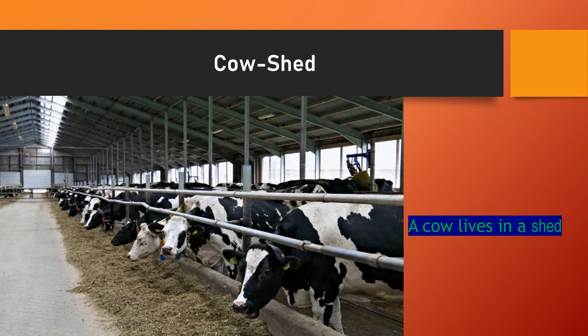This is the shed. So where does a cow live? A cow lives in a shed. The home of a cow is called a shed. The spelling of cow is C-O-W, cow. And the spelling of shed is S-H-E-D, shed.